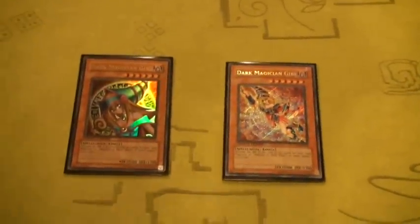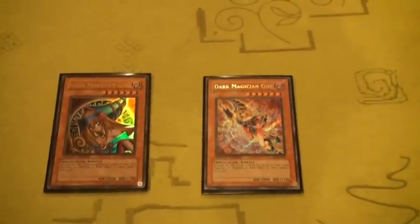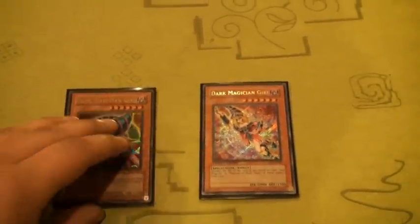And then I have two Dark Magician Girls. I have the third kind as well, the Duelist Pack Yugi one, but I like these two better, or not better, but these ones are in better condition. These ones are damaged a little bit.